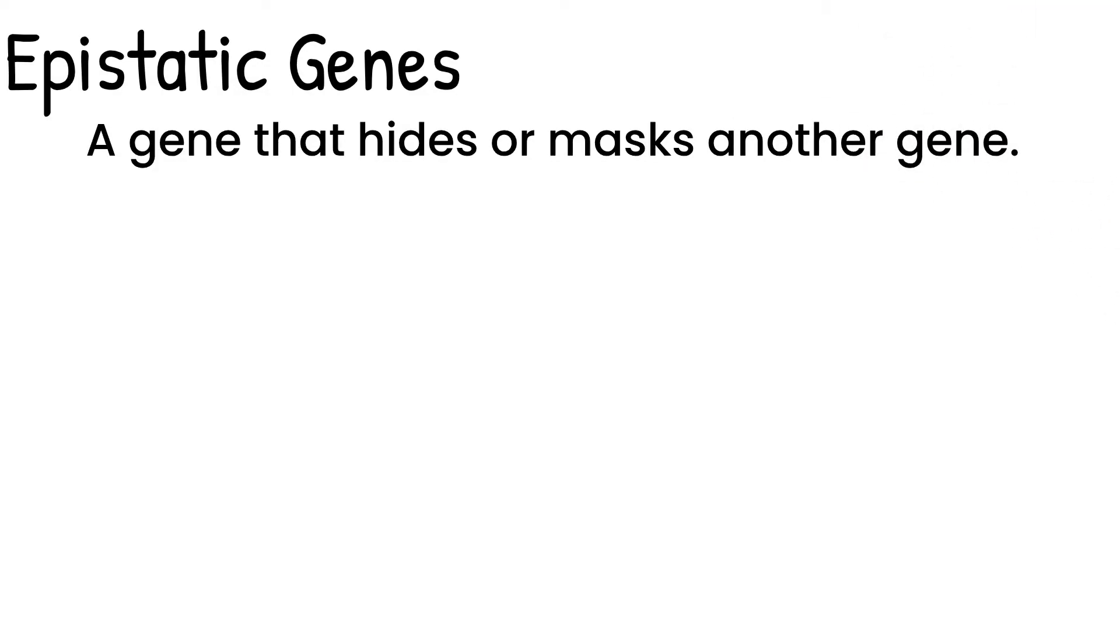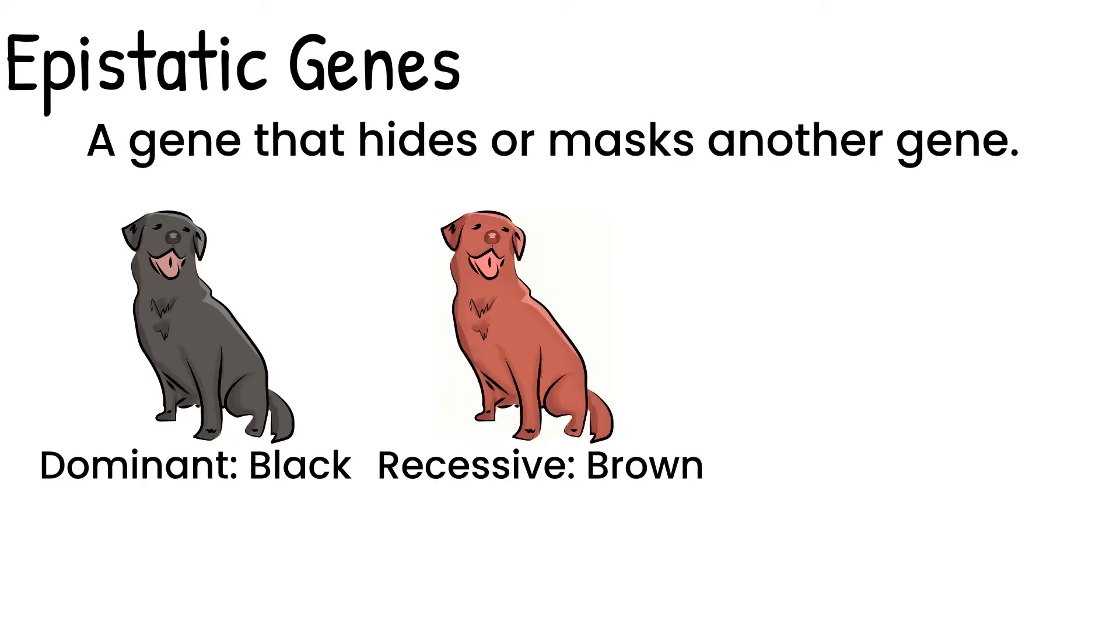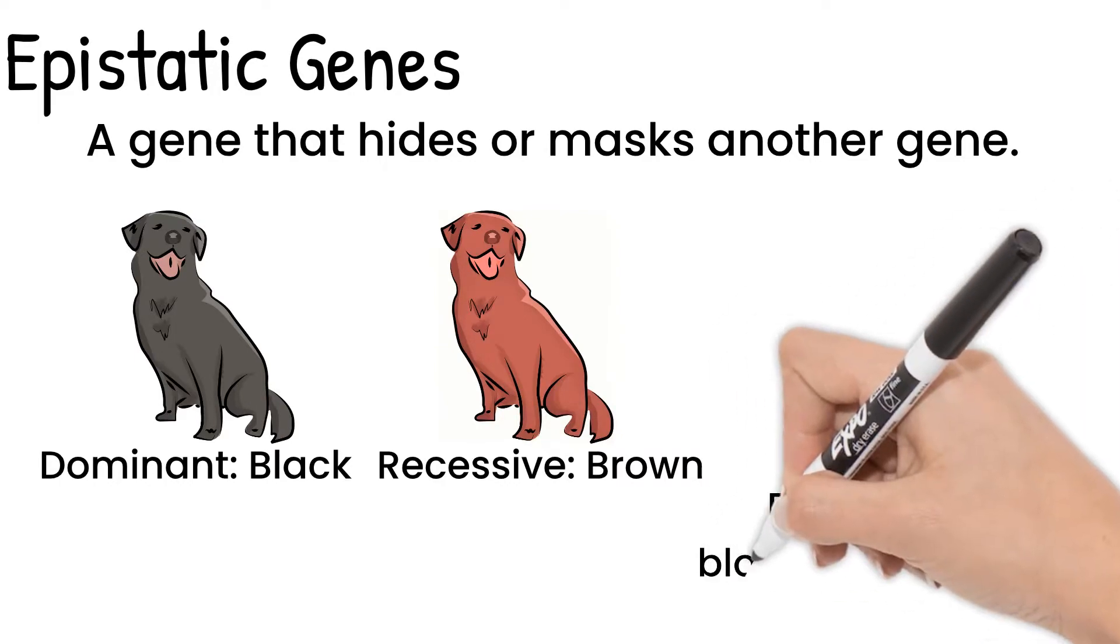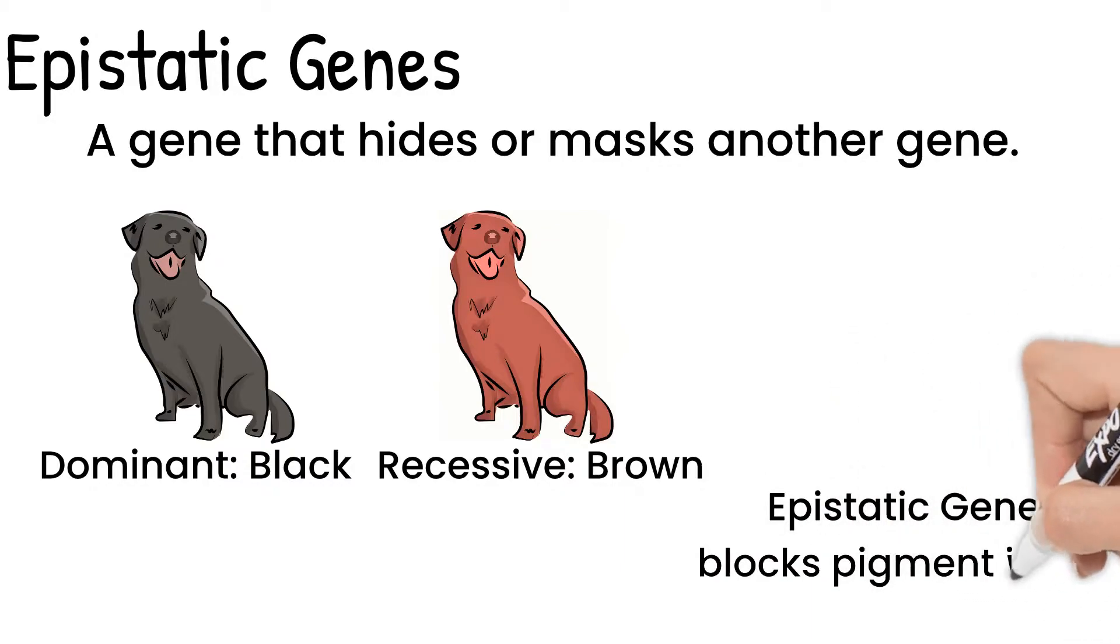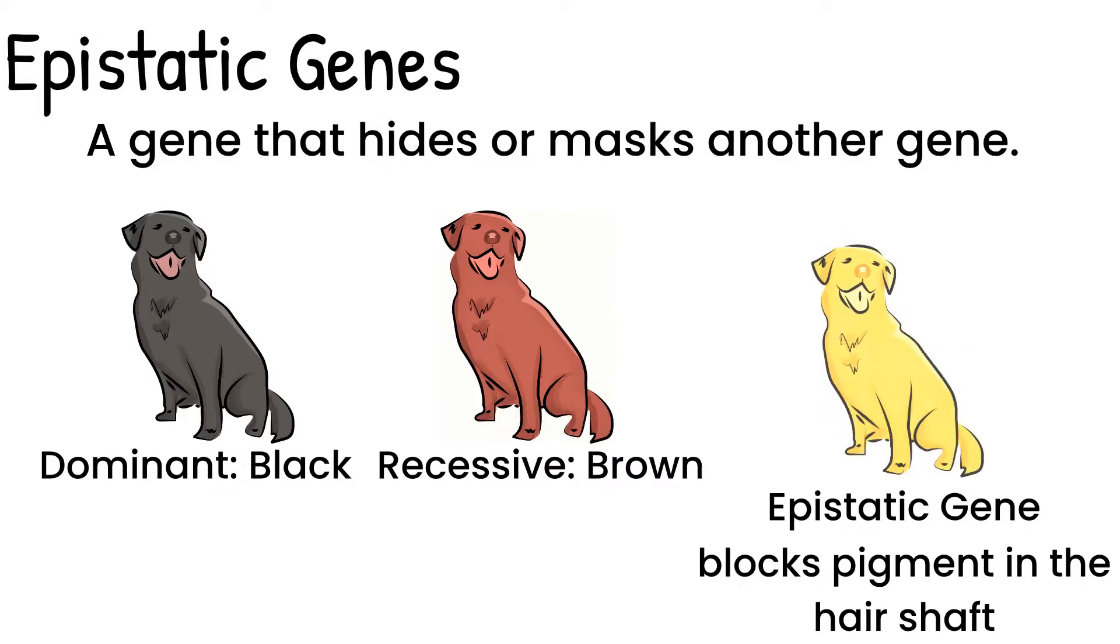A good example is in Labrador retrievers. These dogs have a gene that controls their coat colors, with black being dominant to brown. But there is a separate epistatic gene that when it's homozygous recessive, it prevents dark pigment color in the hair shaft, which leads to a yellow-colored Labrador retriever.